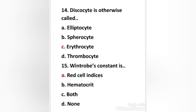Next question: discocyte is otherwise called elliptocyte, spherocyte, erythrocyte, or thrombocyte? The right answer is option C: erythrocyte. Discocyte is another name for erythrocyte.